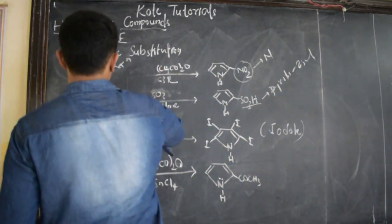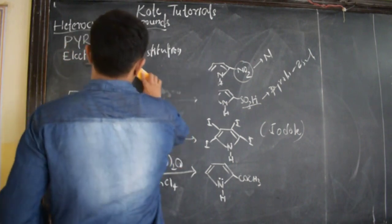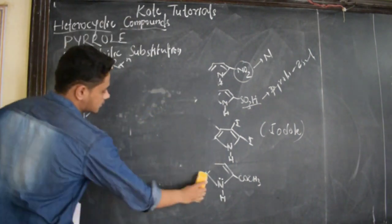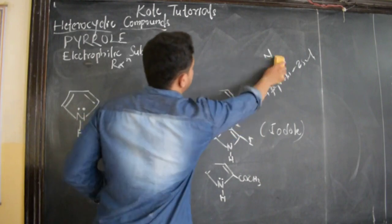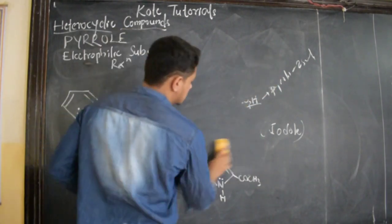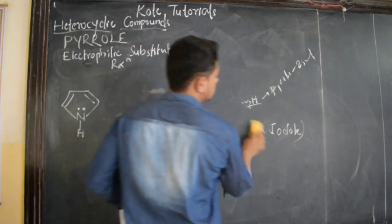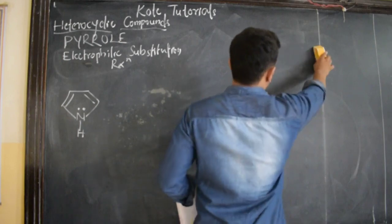So the electrophile only attacks at the second position, which I have explained the same thing in furan. In case of furan, I have explained this in detail, so please go there and watch those videos if you have not.